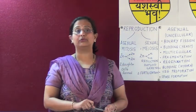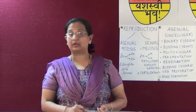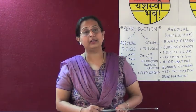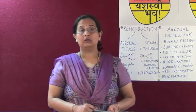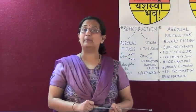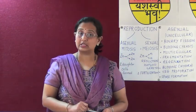The gynoecium is the female reproductive part of the flower, also called the carpel. It consists of the stigma, style, and ovary. The stigma is the sticky receptive part. The style is the long tube bearing the stigma at its tip. The ovary is the basal rounded globular structure that consists of ovules inside. The process of transfer of pollen grains from an anther to the stigma is called pollination.